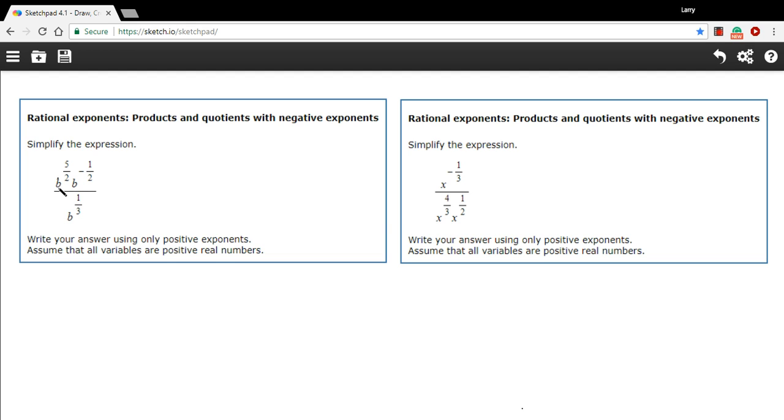When you multiply exponents that have the same base, you just add the exponents. To simplify this, we need to add the exponents 5/2 and negative 1/2. Well, 5/2 minus 1/2 is 4/2, so that exponent really is 2. The top here is b squared.